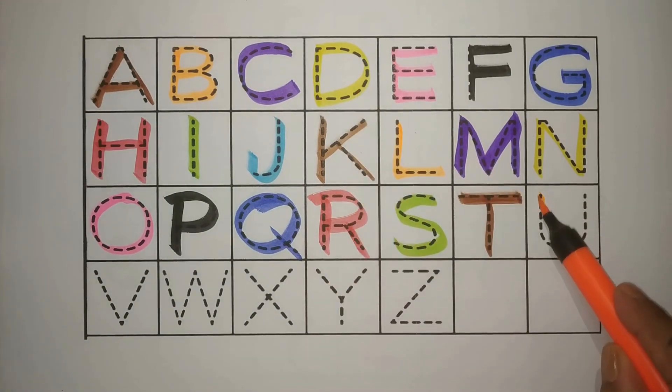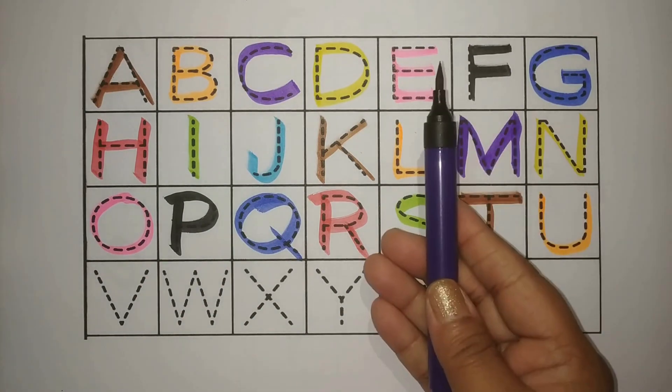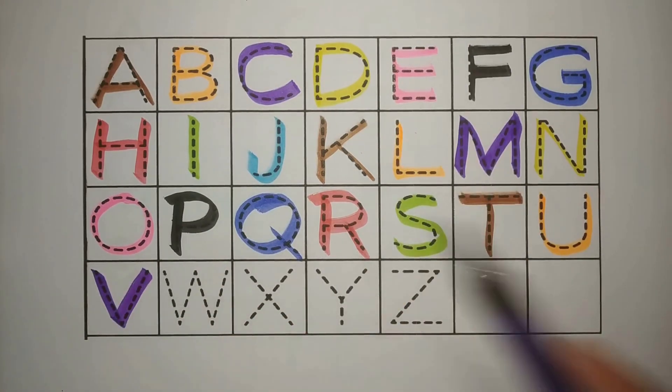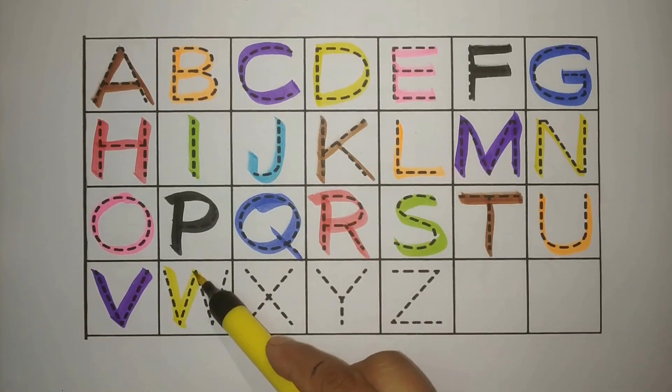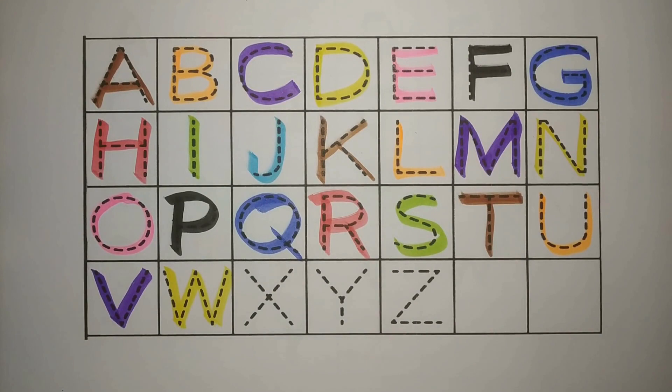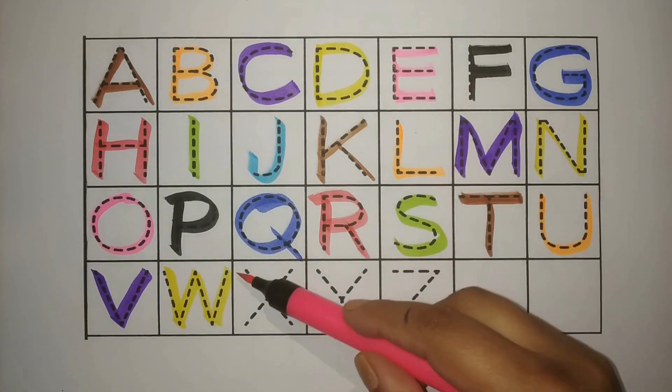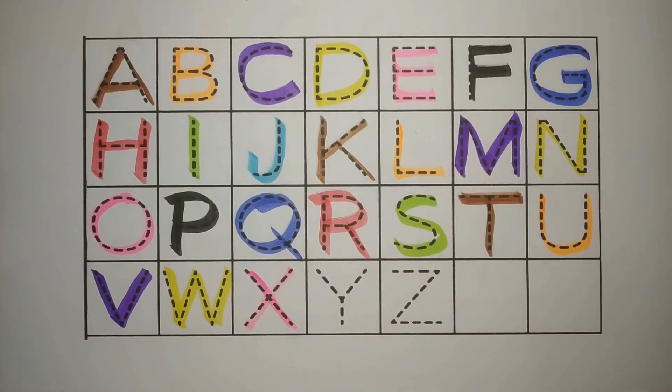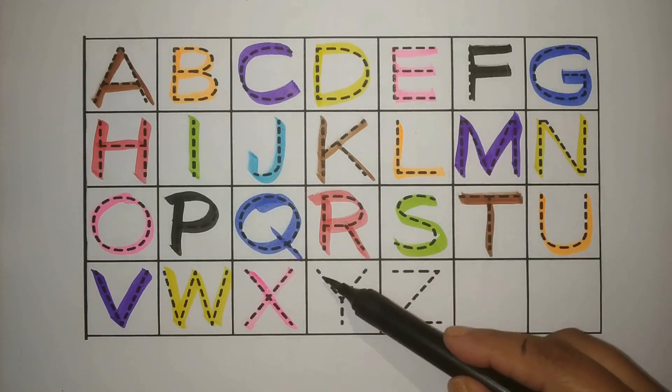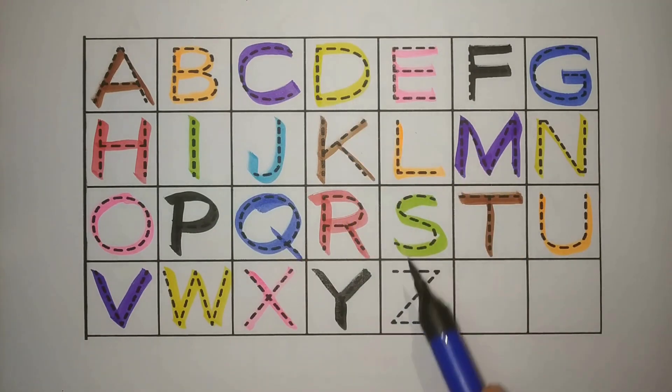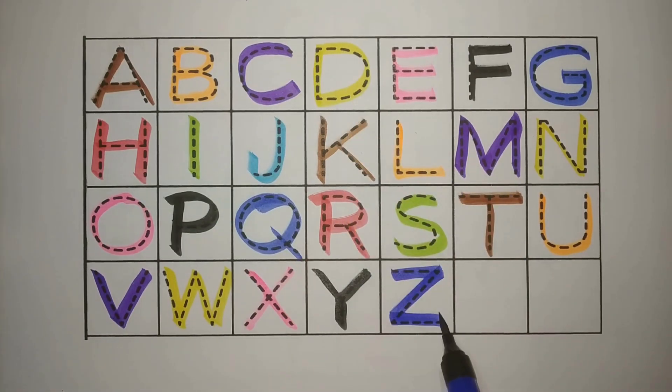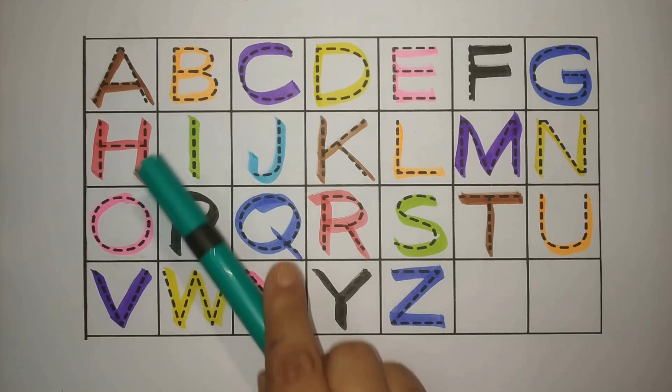Orange U, U for Umbrella, Chatri. Purple V, V for Vessel, Bartan. Yellow W, W for Water, Pani. Pink X, X for Xylophone. Black Y, Y for Yacht. And Blue Z, Z for Zebra. Let's revise, Chalo phir se karte hai.